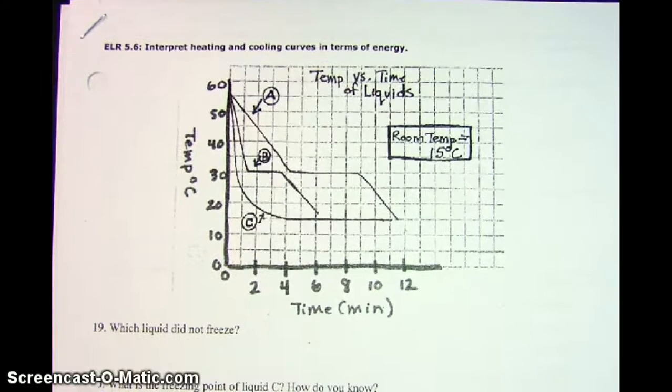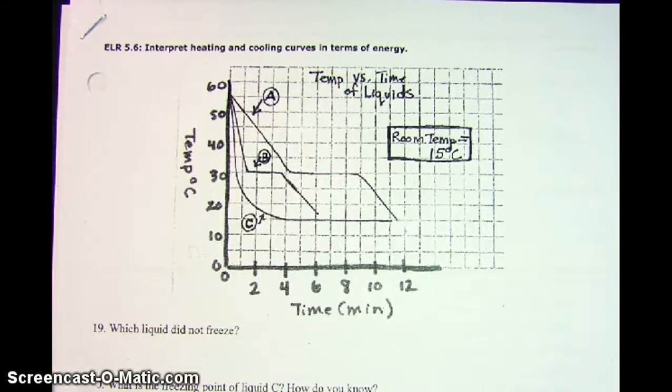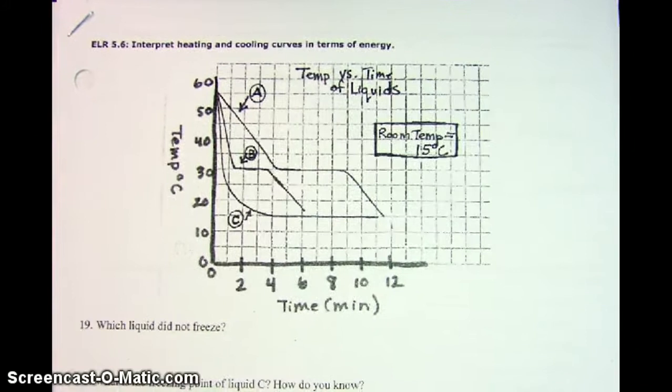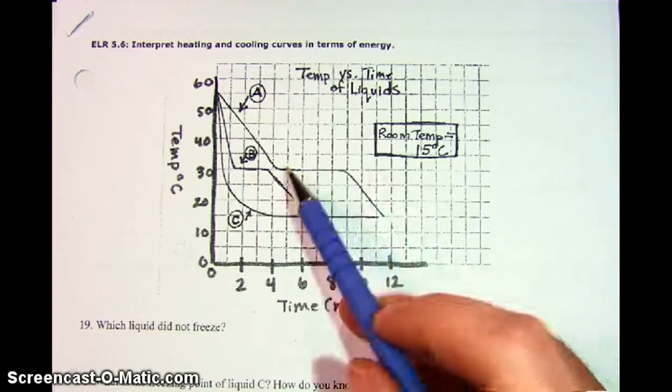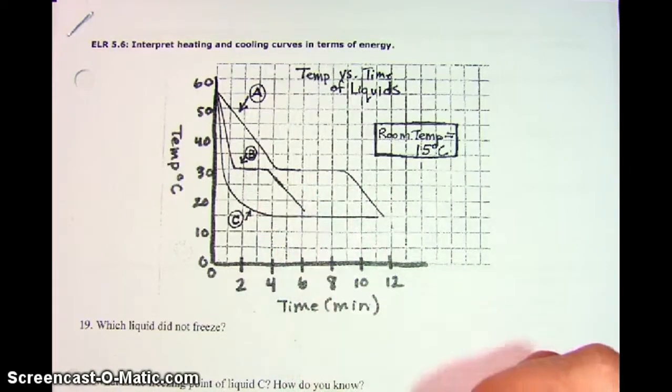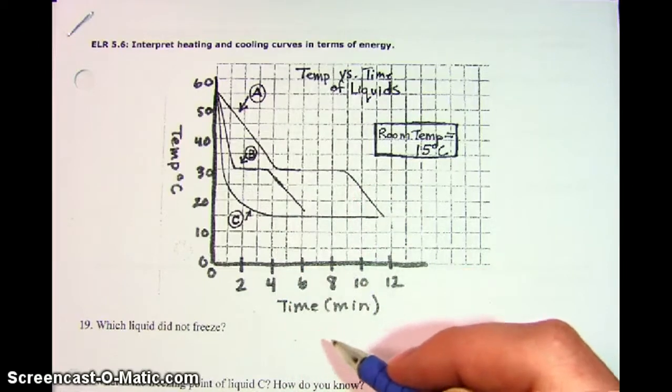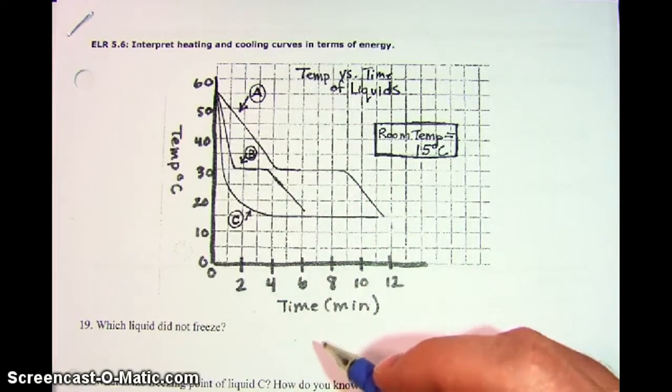The first one says, which of the liquids did not freeze? This one is a tempting question to say, well they all froze, because you've been trained to think that any time there's a flat line, that's going to be a freezing point, and it seems like they all have a flat line. However, hopefully you remember that there is one other case where there can also be a flat line.